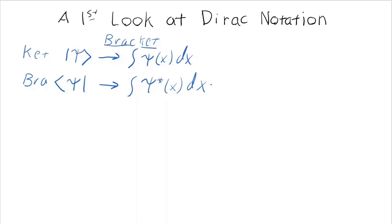Bras and kets exist in vector space, and they have an inner product. An inner product is a dot product, like if you have two vectors. This is from basic mechanics.